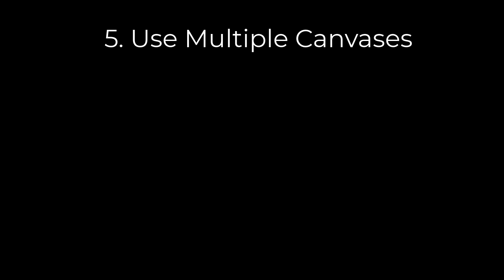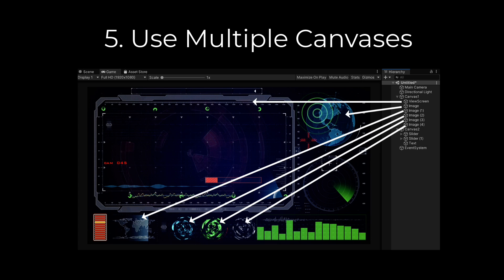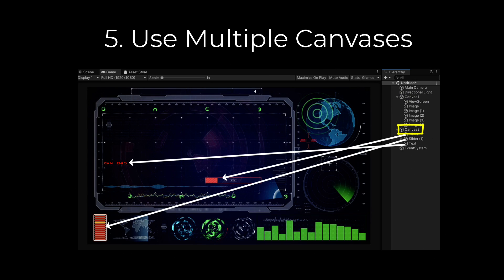Last but not least, you can use multiple canvases when displaying your user interface. When you put items onto a canvas, it does a batching process to process all meshes belonging to that canvas. Every time you interact with your UI, it has to regenerate all those meshes — a rebatching that can take significant processing. If you have a complex UI, it's a good idea to have more than one canvas: put items that never change onto a static canvas, and put items that do change onto a separate canvas, reducing the work needed every time something updates.